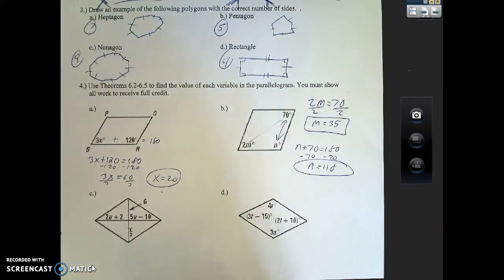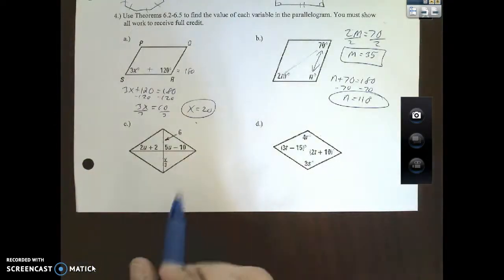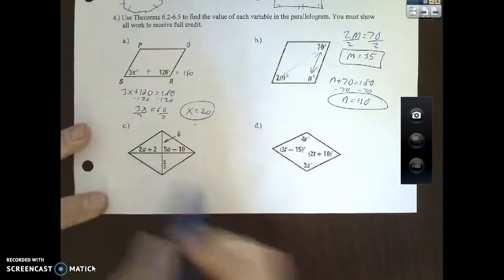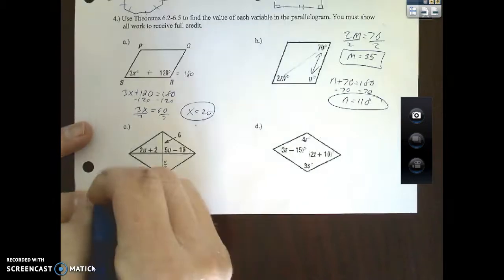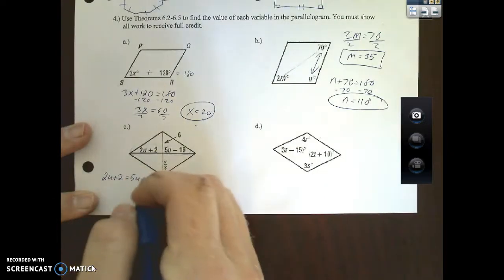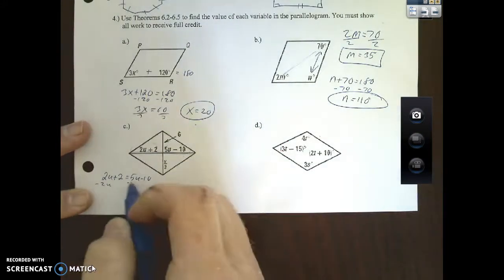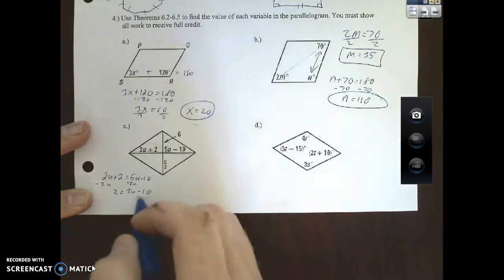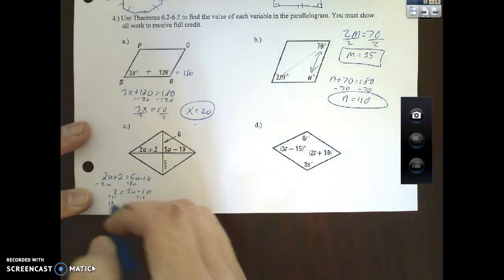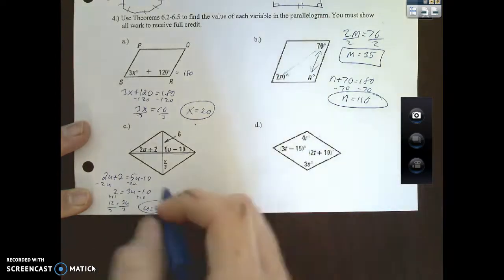Part C, this is probably the first time you guys are seeing this in a long time, but diagonals—the things in the same diagonal are congruent. So I can say here is 2u plus 2 equals 5u minus 10. I can subtract 2u over, 2 equals 3u minus 10, I can add 10 over, 12 equals 3u, I can divide by 3, u equals 4.